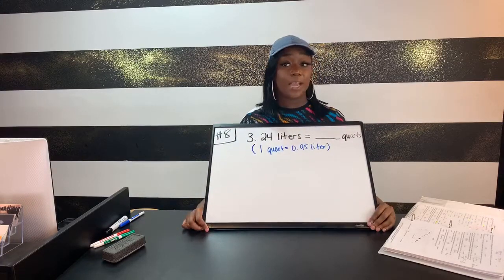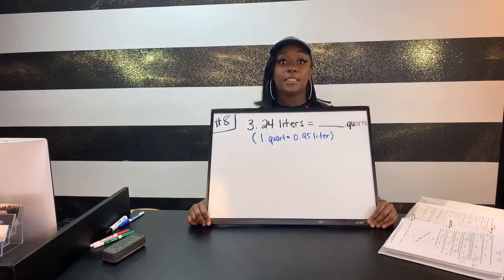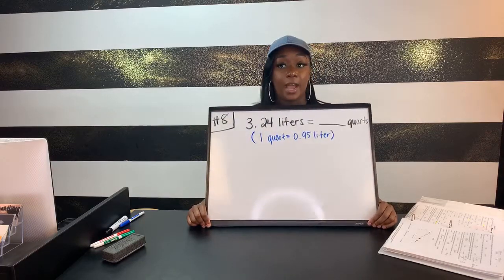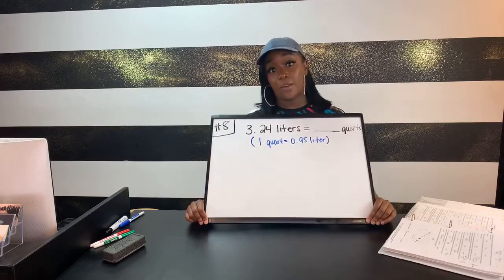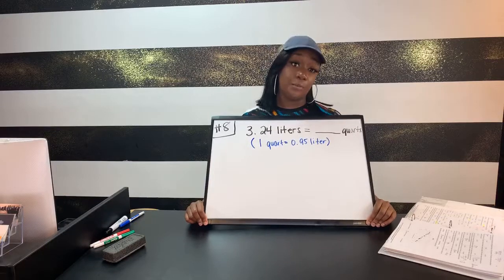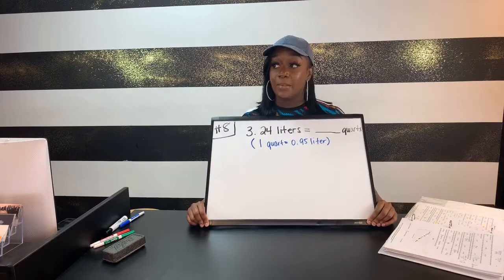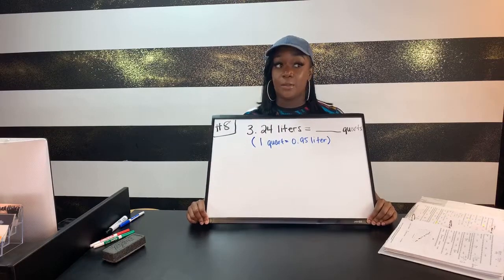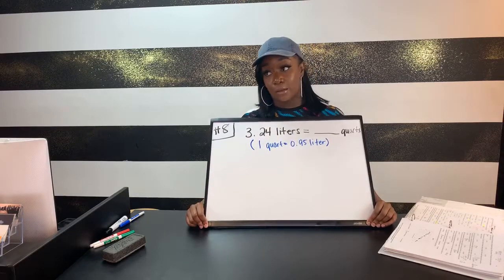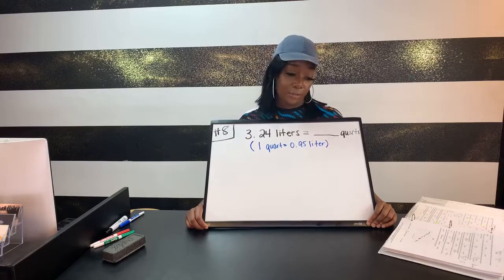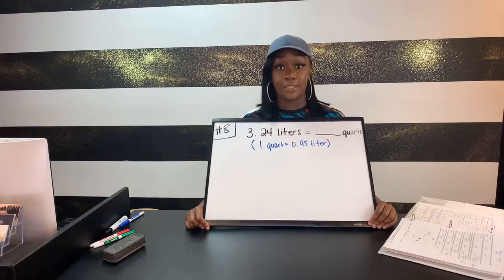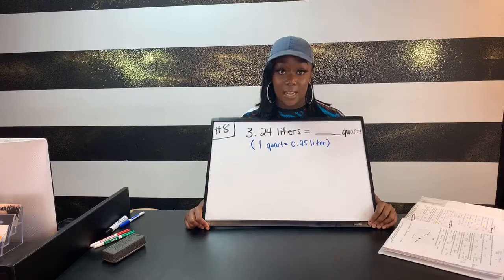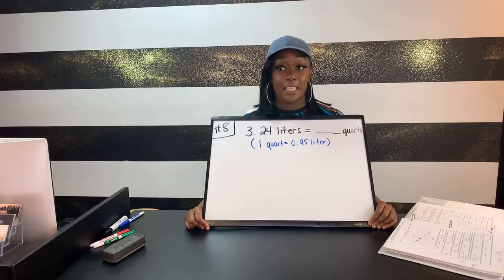The problem with questions like this comes down to multiplying and dividing, and sometimes people have a hard time deciding which to do. Some people use shortcuts based on whether you're going from a smaller to a bigger unit or vice versa, but I prefer to set up my ratio so I can visually see the units canceling out and actually see the conversion happening.